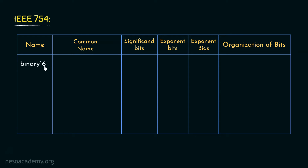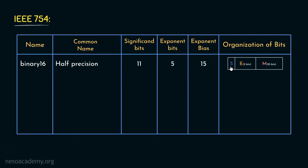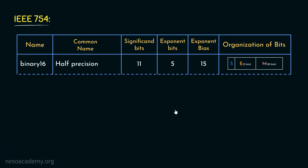The first one is Binary 16, where the 16 stands for the number of bits specified. This standard is commonly known as half precision. For significant bits, we have 11 bits — this is the accumulation of the sign bit and the mantissa portion. If 11 bits are specified for the sign and mantissa portion, then the remaining 5 bits will be specified for the exponent, since we have 16 bits in total. For Binary 16 or half precision, the exponent bias is 15. The organization of bits is: the MSB is the sign bit, followed by 5 bits for the biased exponent, and finally the remaining 10 bits are used for the mantissa portion.